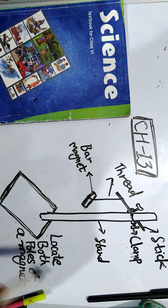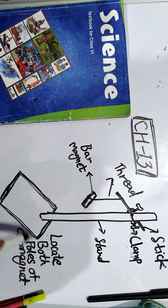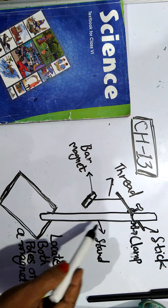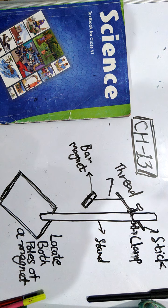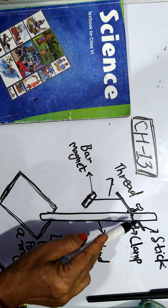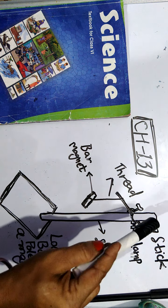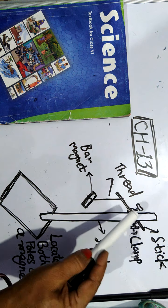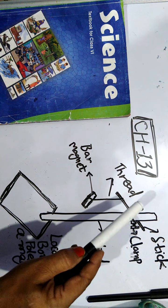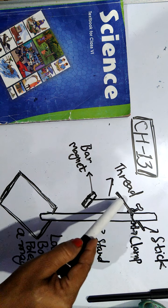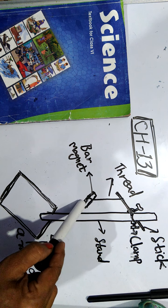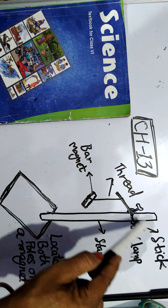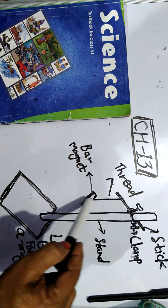To find that, we will plot an experiment. This is a very simple experiment you can do at your home also. In this experiment we have taken a stand, and this stand contains a clamp — a metal clamp. With the clamp of the stand we had attached a stick. This is a simple stick which we had attached to this clamp. We had taken a thread and tied a bar magnet to the thread, and this thread is attached to the stick. The stick holds the bar magnet.